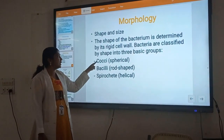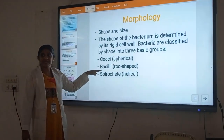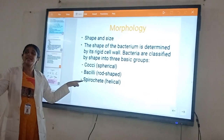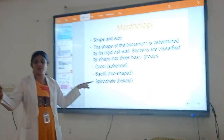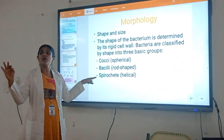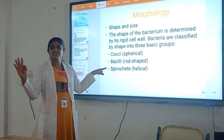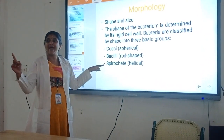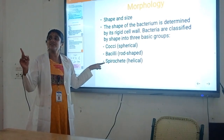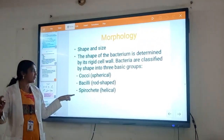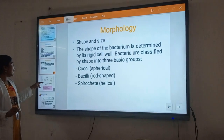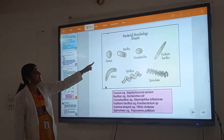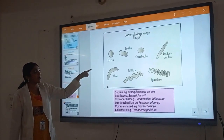In the morphology of bacteria, we can see bacteria are classified into various forms — cocci, bacilli, spirochetes, and others. Generally they are classified into six forms or transformations of bacteria. In this picture, we can identify the various shapes of bacteria.